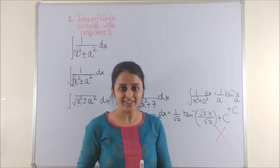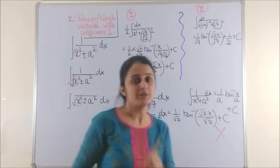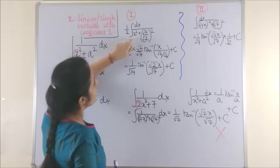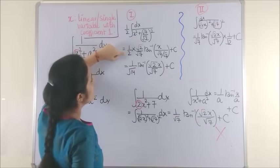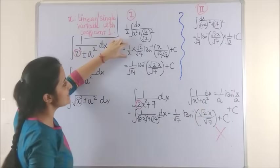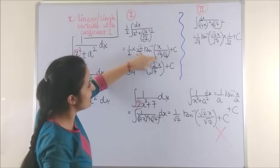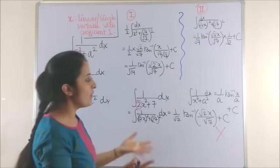So, how do I tackle this problem? You have two methods to address this problem. Method 1, you take two common so that you end up getting the standard form. Now, when you apply the formula, this half is as it is into 1 upon a into tan inverse of x by a. On simplifying everything, you end up getting this.